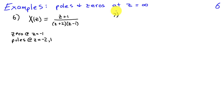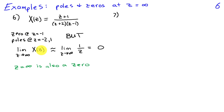We conclude with examples of poles and zeros at Z equals infinity. Suppose X of Z equals Z plus one, divided by the quantity Z plus two times Z minus one. There is a zero at Z equals negative one, and poles at Z equals negative two and Z equals one. However, considering the limit as Z approaches infinity, the numerator has a term in Z and the denominator has a term in Z squared, so X of Z behaves like one over Z. As Z goes to infinity, one over Z goes to zero. So Z equals infinity is also a zero of this Z-transform, even though it's not apparent as a root of the numerator polynomial.